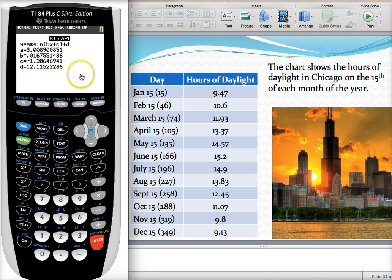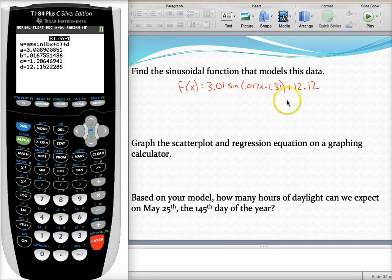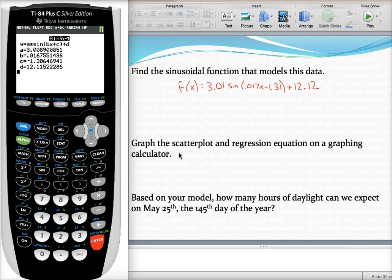Let me go ahead and switch screens for a second, and I'll show you how to now get this graphed, and then we'll answer some questions based on this model. Here I've gone ahead and rounded off those values a little bit to get this equation right here. Let me show you how to get this graphed, not only the scatterplot, but also the regression equation. I'll show you a couple new things.